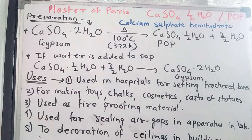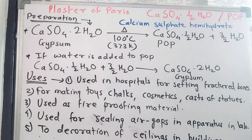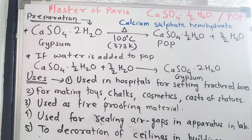The reaction is: CaSO4·2H2O, when heated at 100°C, gives CaSO4·½H2O (plaster of Paris) and 1½ water molecules evaporate. This reaction needs controlled heating. If more heat is provided, POP loses that remaining half water molecule and becomes dead plaster, which has no use. So converting gypsum into POP must be done with controlled heating.